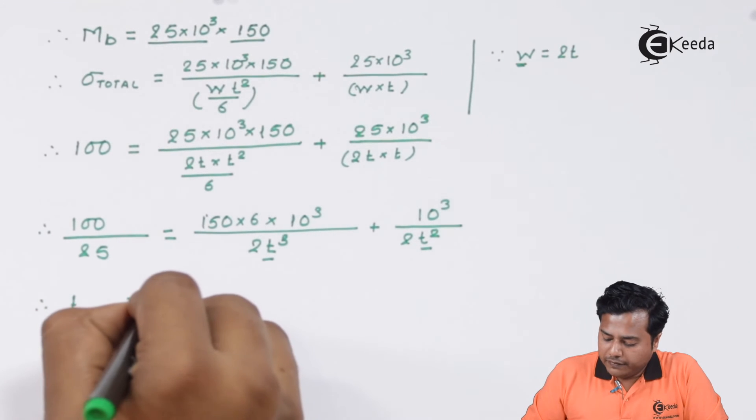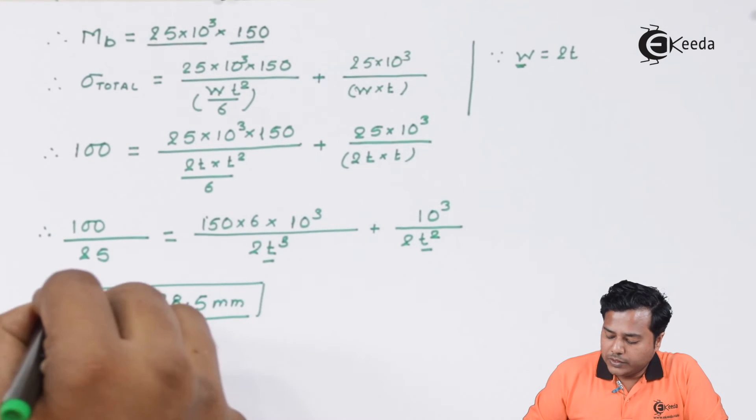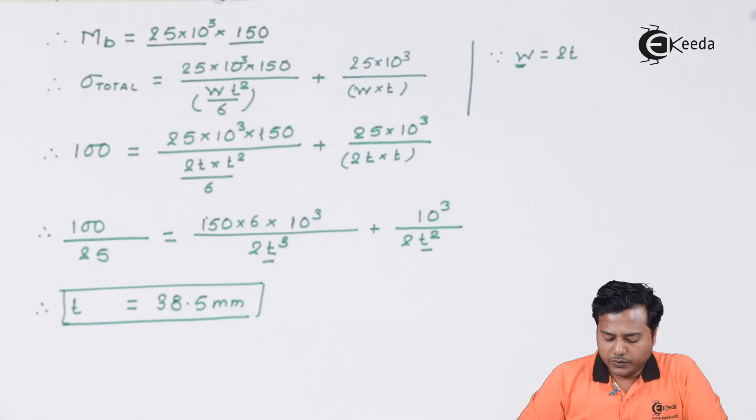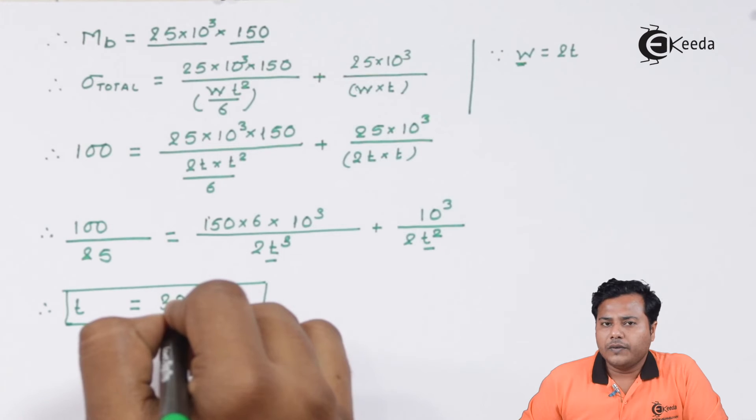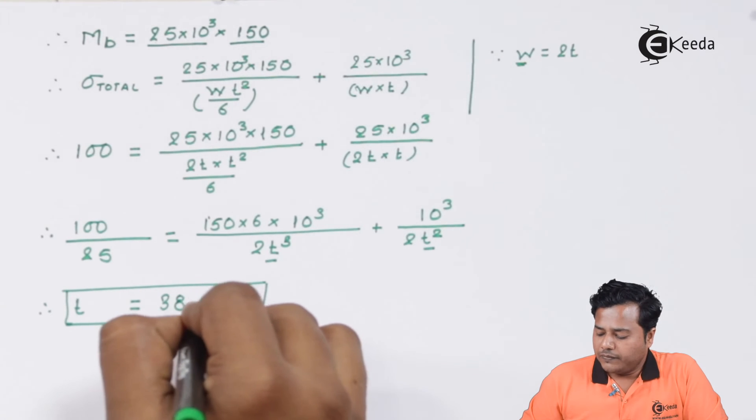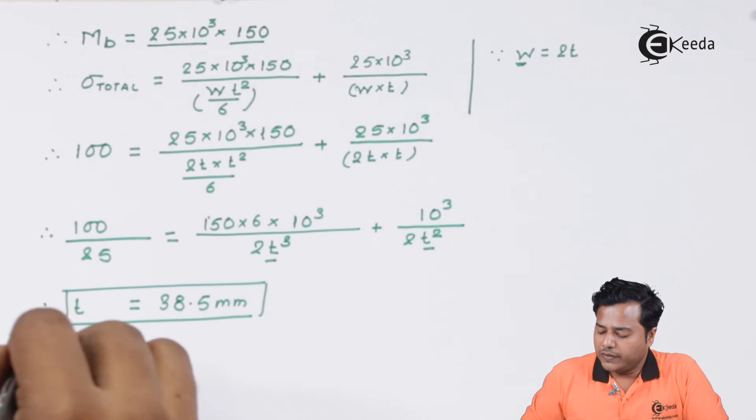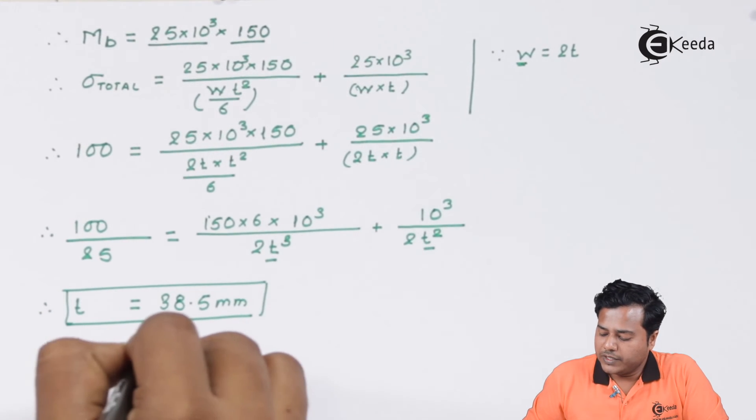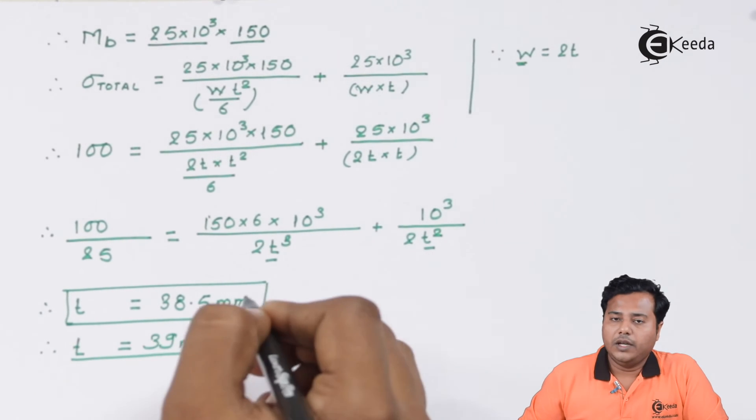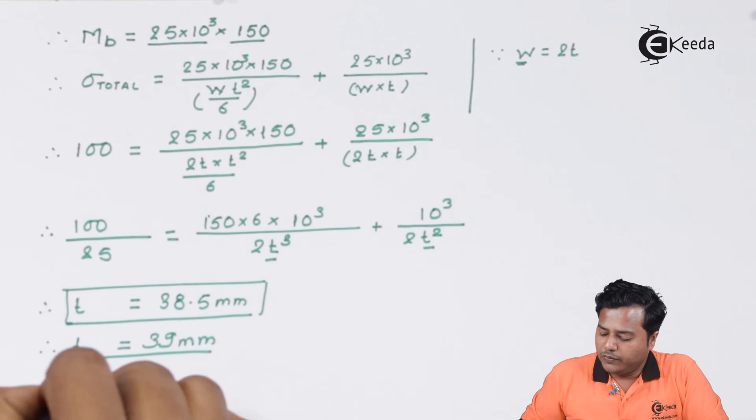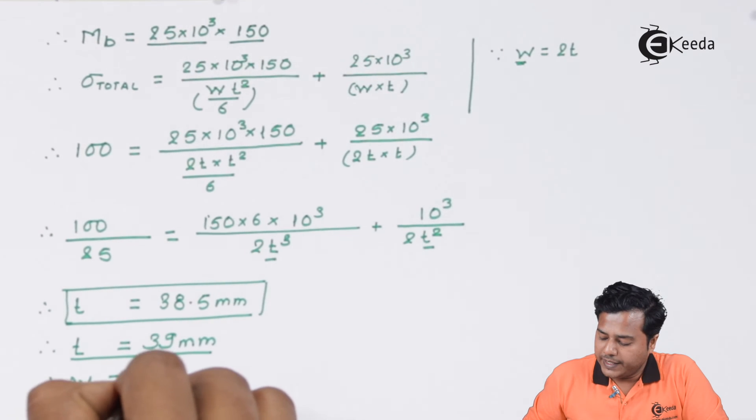So this is the first factor. Thickness can be manufactured easily with round up values. When it is a fraction value, it is difficult or can be a costly process. So we will round up this value and have thickness T which is exactly 39 mm to be used. Based on this value, we know that the value of W is twice the T, it becomes 78 mm.